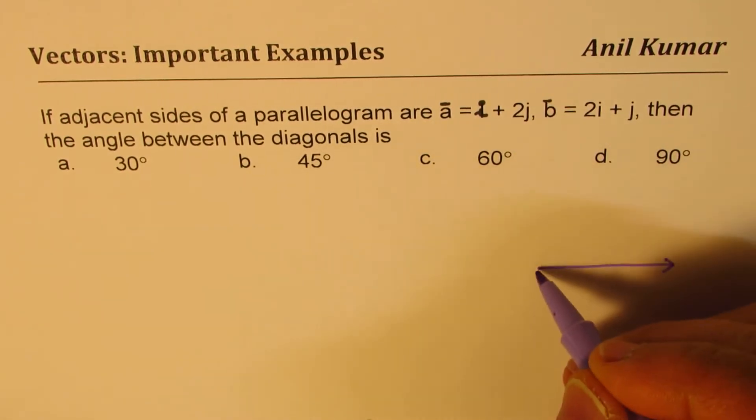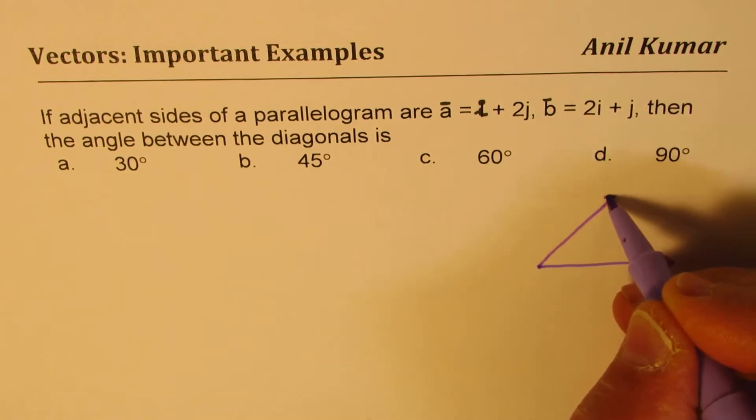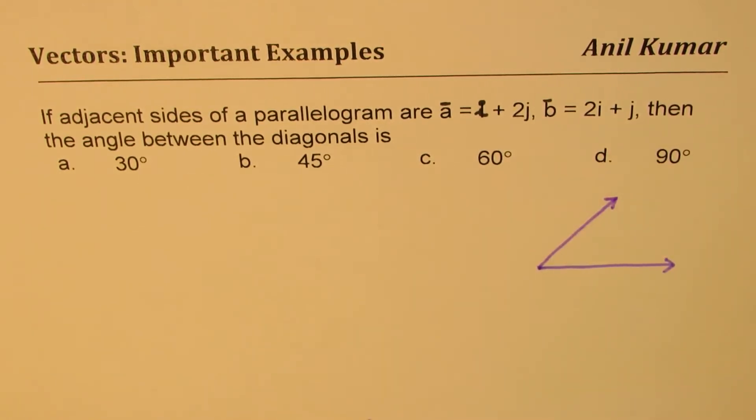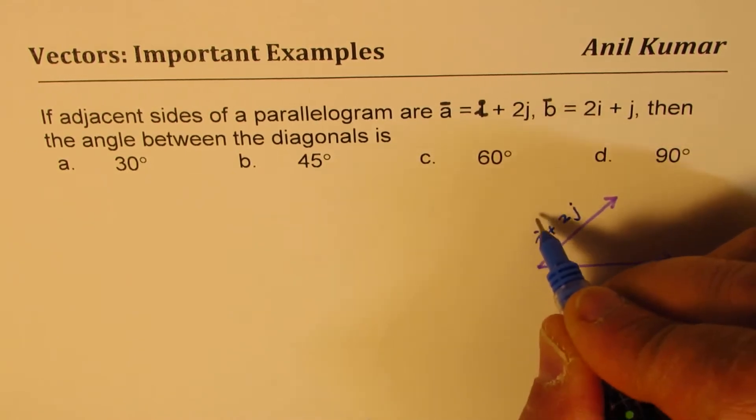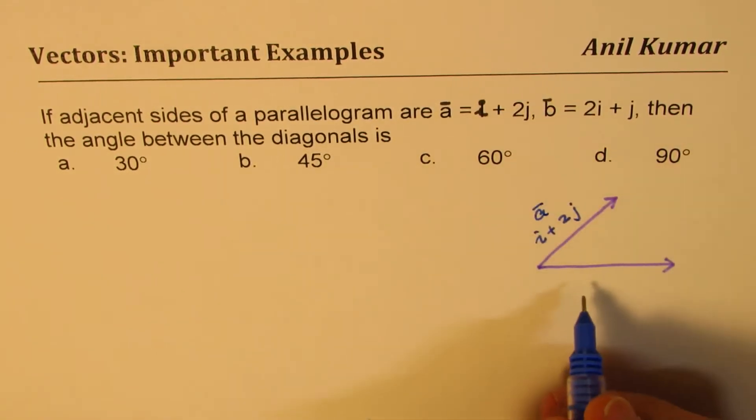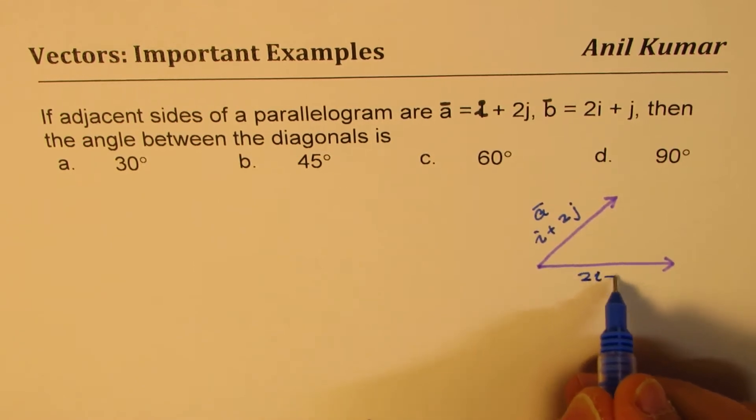Let's say this is one side of a parallelogram, that is the other side of a parallelogram. So we are given that the two sides are i + 2j, let's call this as a, and this one we are given as 2i + j.